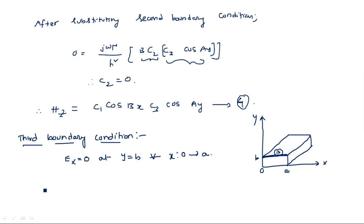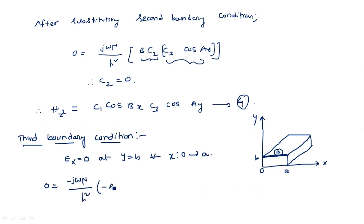Now we need to take the relation between Ex and Hz, substitute the latest Hz expression, differentiate with respect to the appropriate variable, and apply the boundary condition. Doing the same calculation as in the first boundary condition case, we get: 0 = (−jωμ / h²)(−a)·c1·c3·cos(bx)·sin(ay), evaluated at y = b. This entire product equals zero, so sin(ab) = 0.